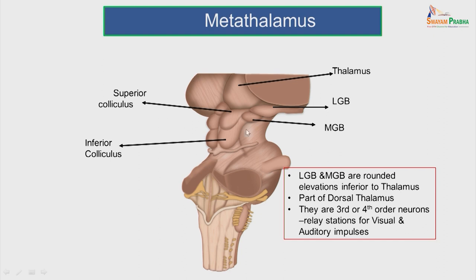The next part of the discussion is the metathalamus. It is a part of the dorsal thalamus, forming rounded elevations at the posterior-most part of the thalamus where the pulvinar continues. There are two rounded elevations acting as third and fourth order neuron relay stations for visual and auditory impulses: the lateral geniculate body and the medial geniculate body.